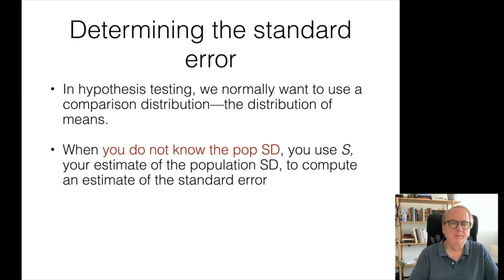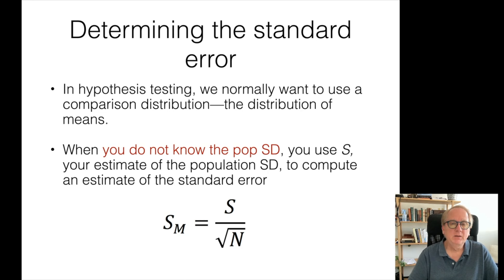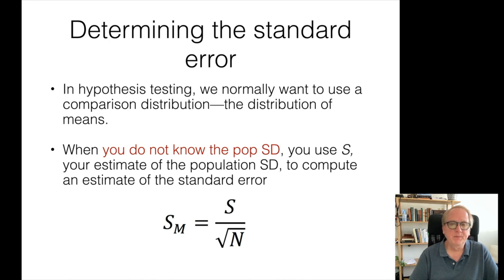But what about when we don't know the population standard deviation? What you do then is you use s — our estimate of the population standard deviation — to compute an estimate of the standard error. The s is the formula for the standard deviation where n-1 is in the denominator. So we go ahead and use that as our estimate of the population standard deviation, then take that and divide it by the square root of n. We now have this new symbol, s sub m, which stands for an estimate of the standard error. So we have an estimate of what we think the standard error is like in the population of the distribution of means, but it is not the same thing as what we had before because we're making an estimate.